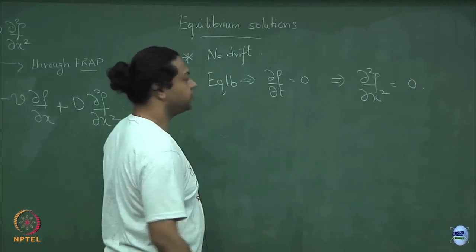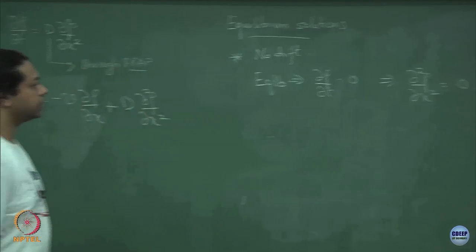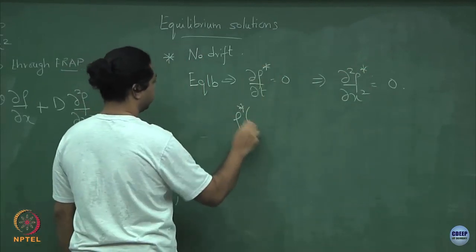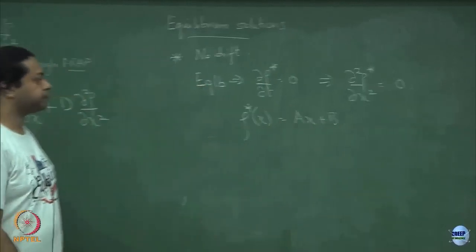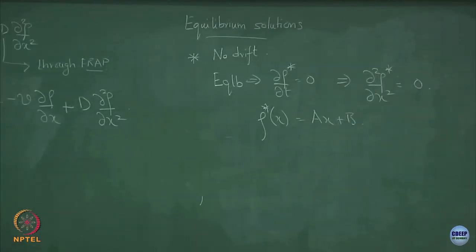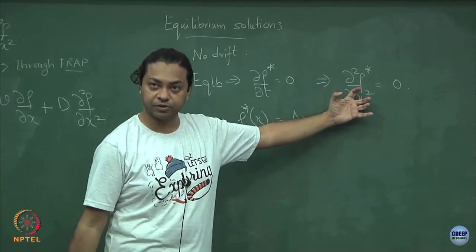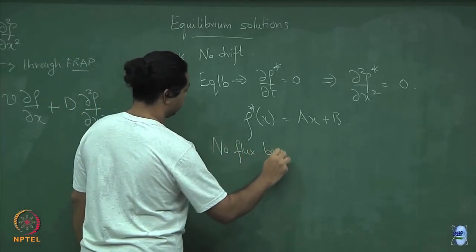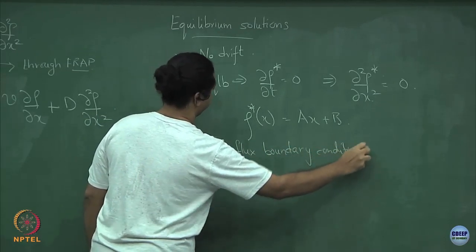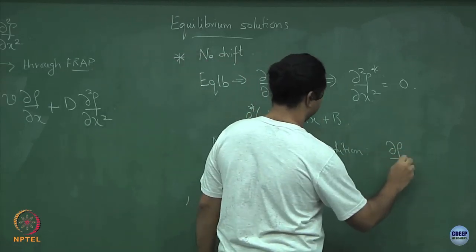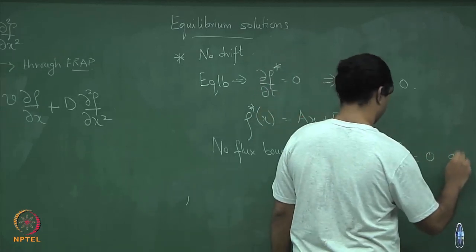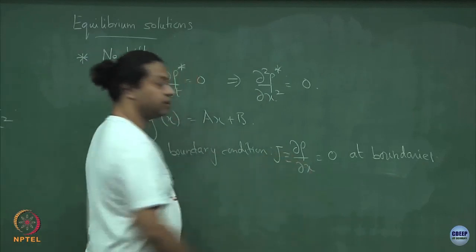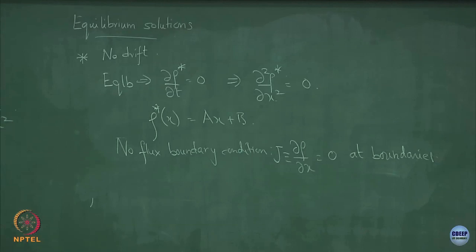So what is the solution of this? We are just doing this in 1D — you can extend all of these to higher dimensions. If del squared rho del x squared equals 0, I can write rho star of x as some a·x plus b. I need some sort of a boundary condition to fully specify this differential equation. Let me use a no-flux boundary condition, which means the current — or equivalently del rho del x — equals 0 at the boundaries.